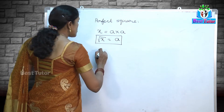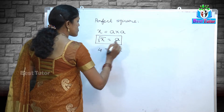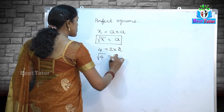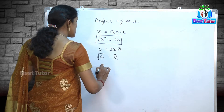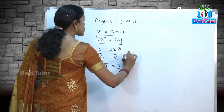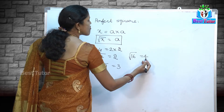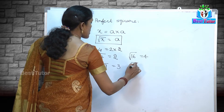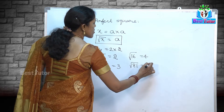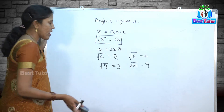We know that 4 equals 2 into 2, so the square root of 4 is equal to 2. Similarly, square root of 9 is equal to 3, square root of 16 is equal to 4 because 4 fours are 16. Square root of 81 is equal to 9 because 9 nines are 81.